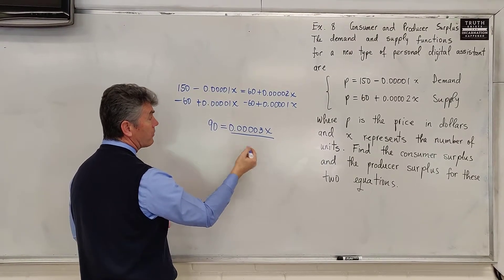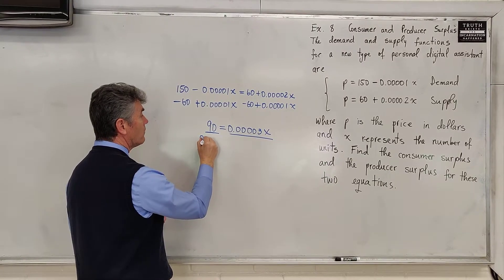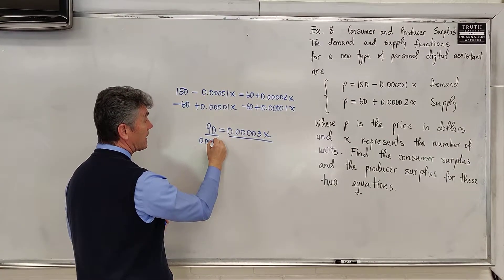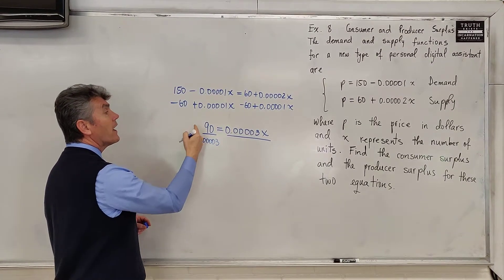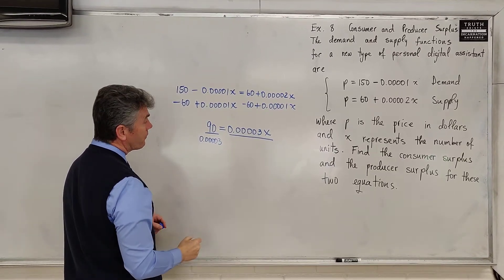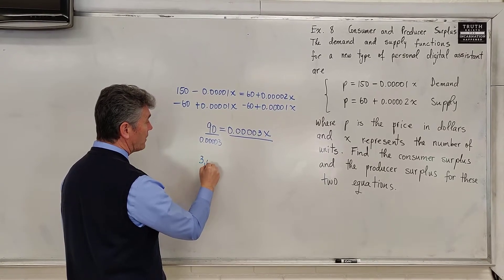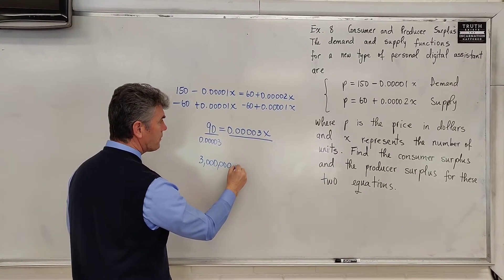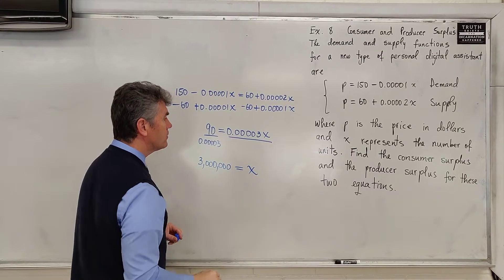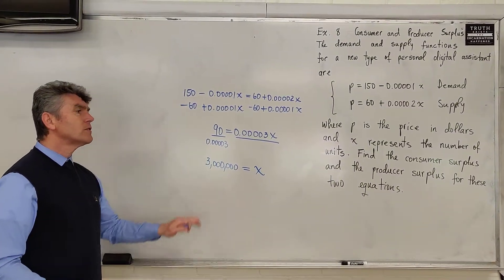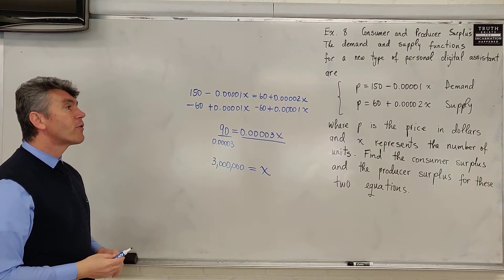We divide 90 by 0.0003, which equals 3 million. So 3 million equals x. Now we know the units produced. We also want to know the price.